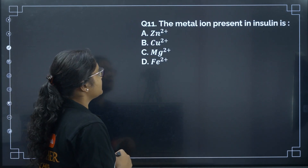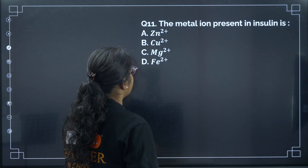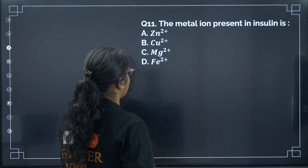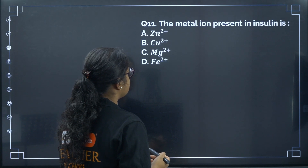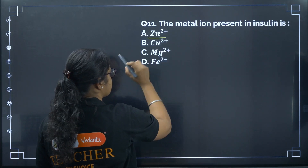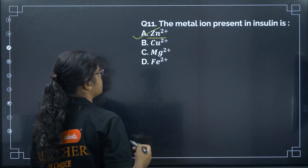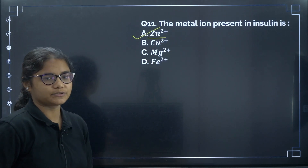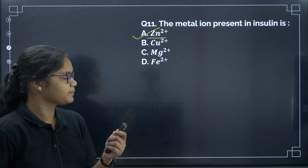Question 11: The metal ion present in insulin is Zn²⁺. The correct answer is option A.